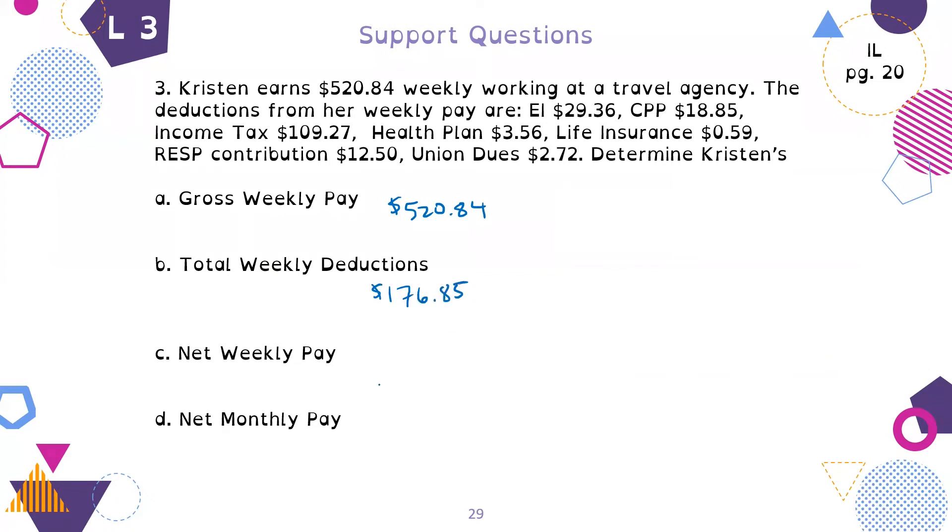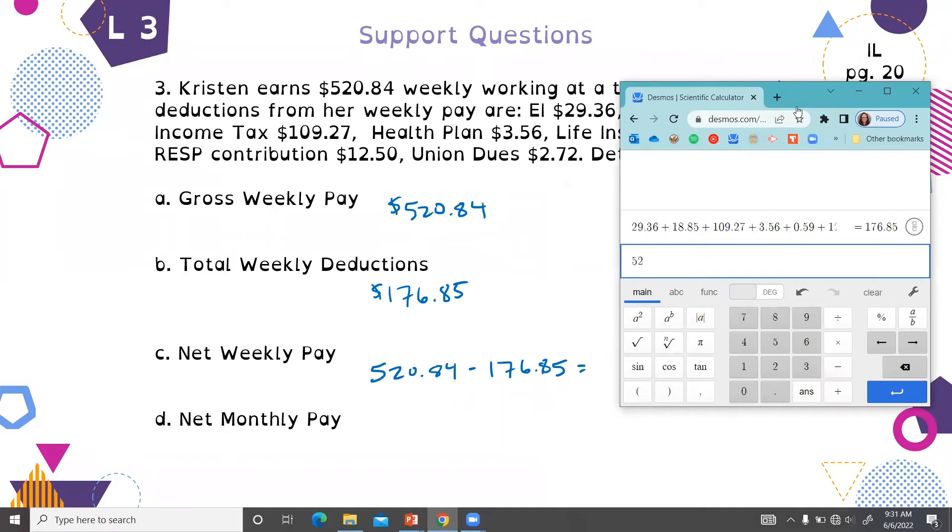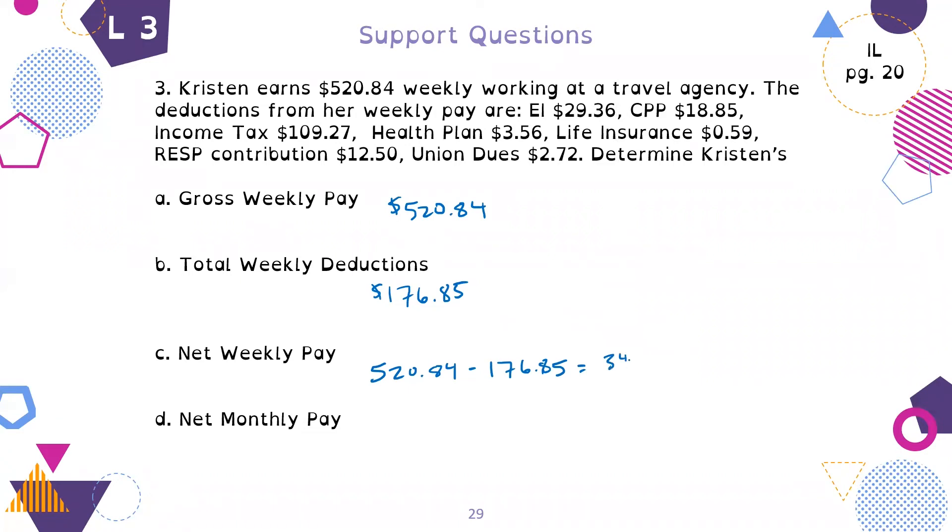Your net weekly pay is going to be your gross pay, $520.84, take away your weekly deductions, $176.85. I can't show all my work because I'm limited by what we have on the radio. So our gross pay take away our deductions is $343.99. That's her net weekly pay.